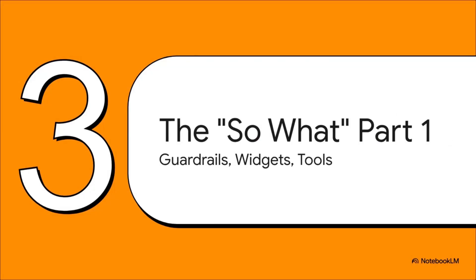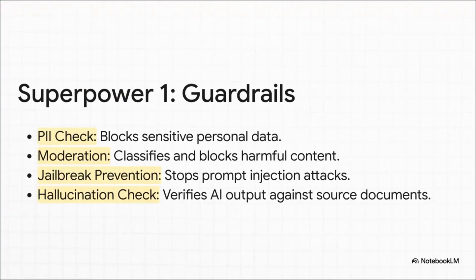A visual builder is awesome, but what really makes this tool special? Superpower number one: a massive focus on safety and reliability. These built-in guardrails are a huge deal, especially for real business use. You can automatically stop personal information from getting through, block users from trying to jailbreak your prompts, and you can even have another AI model check the main agent's work for factual errors against your own documents. That's incredible.